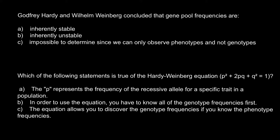And here is the first question. Godfrey Hardy and Wilhelm Weinberg concluded that gene pool frequencies are — and here are three answers to choose from. Answer A: inherently stable. Answer B: inherently unstable. And answer C: impossible to determine since we can only observe phenotypes and not genotypes.